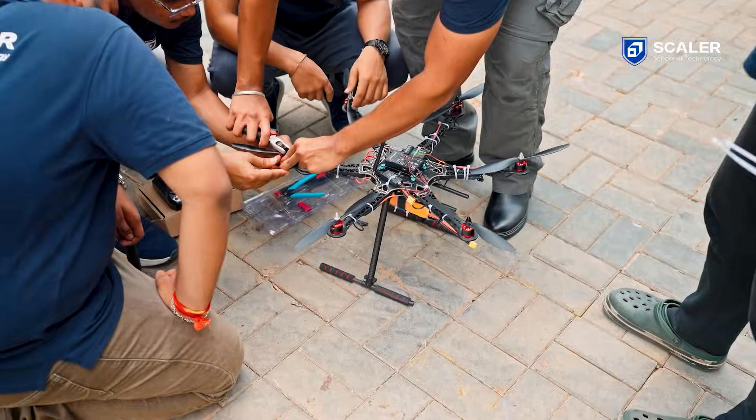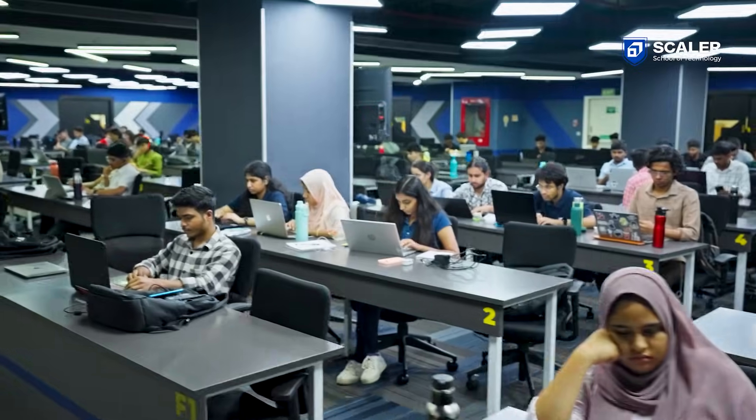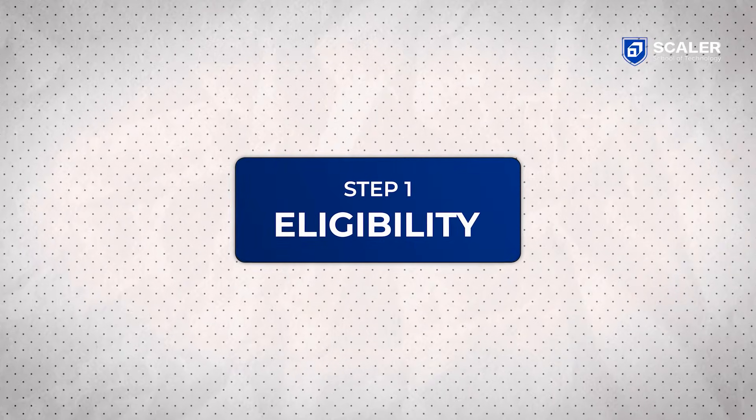Last year, 21,000 people applied to Scalar School of Technology and only 680 made it. We are looking for students who want to learn alongside top engineers and push themselves to be the best in the country. Now let's go through the process one by one. Step one is where you check your eligibility.